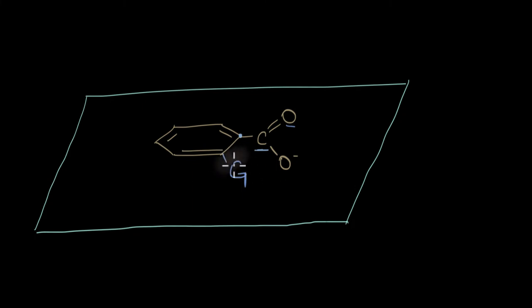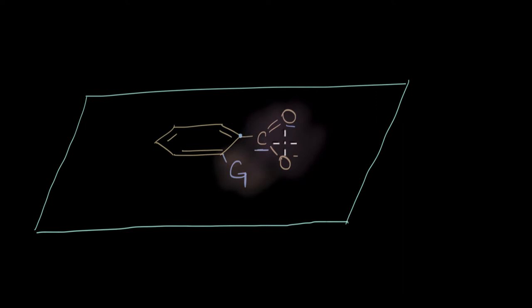The electron cloud of this group starts repelling with the electron cloud of this group. This repulsion creates instability and to minimize this repulsion, become more stable, the bond is rotated.